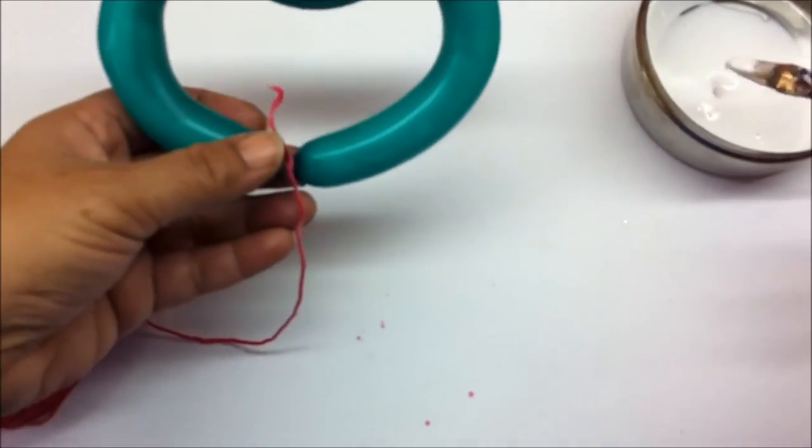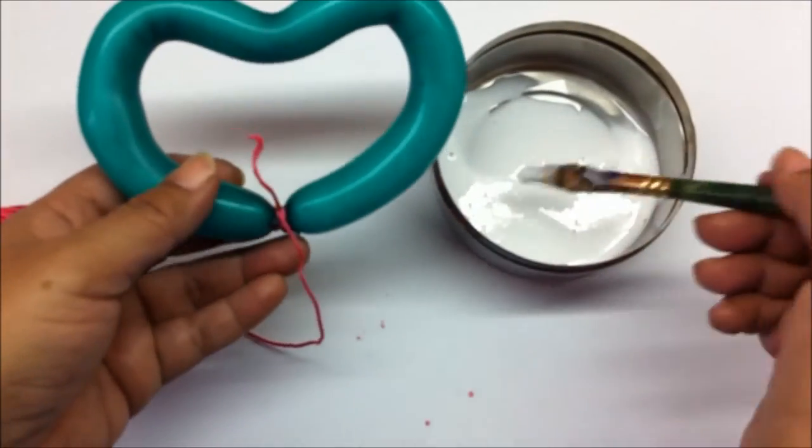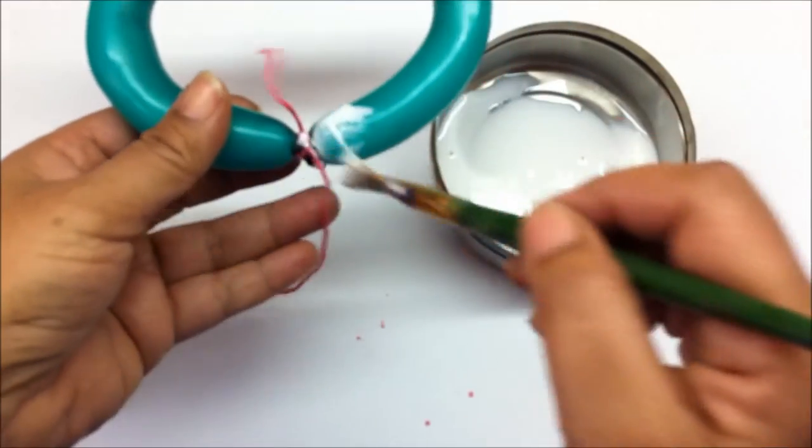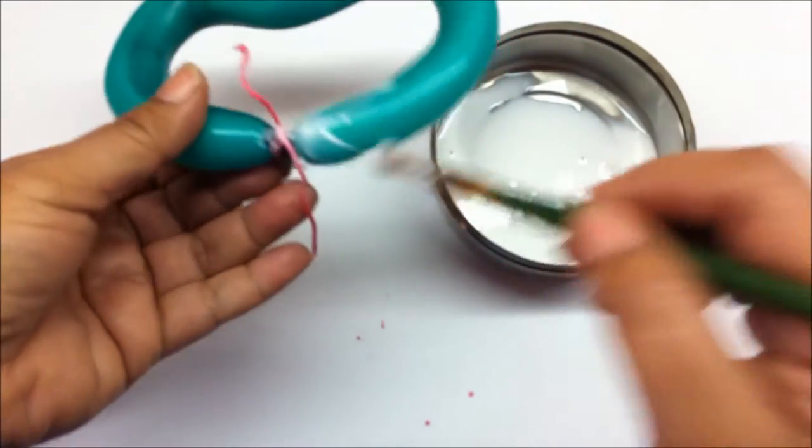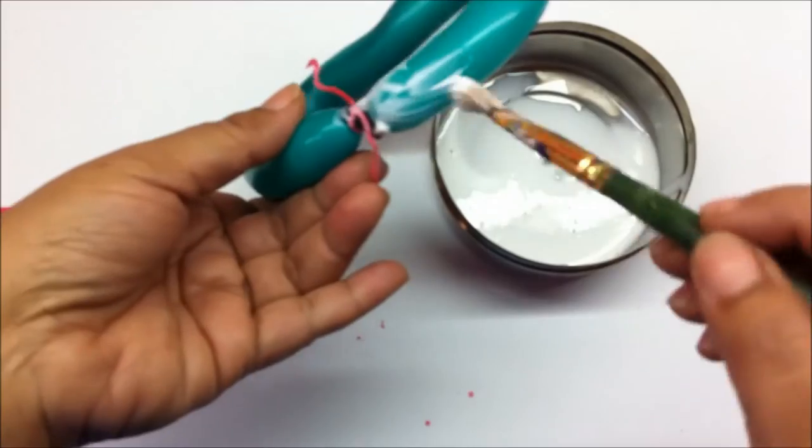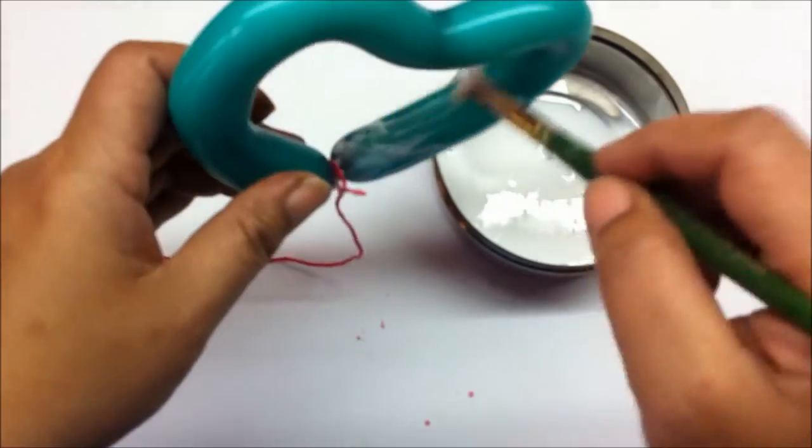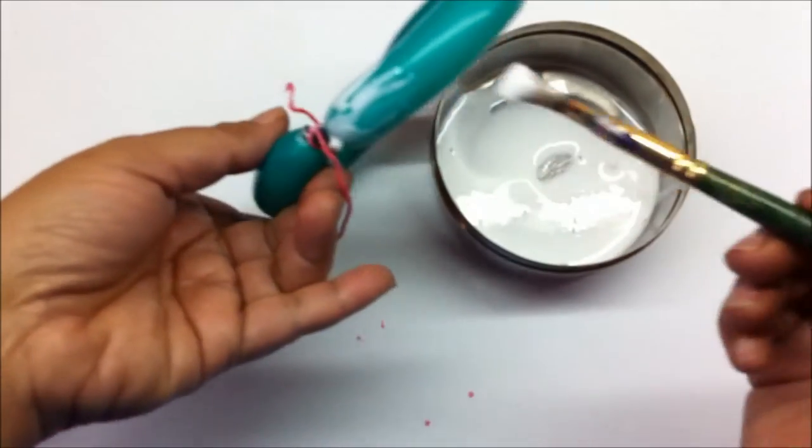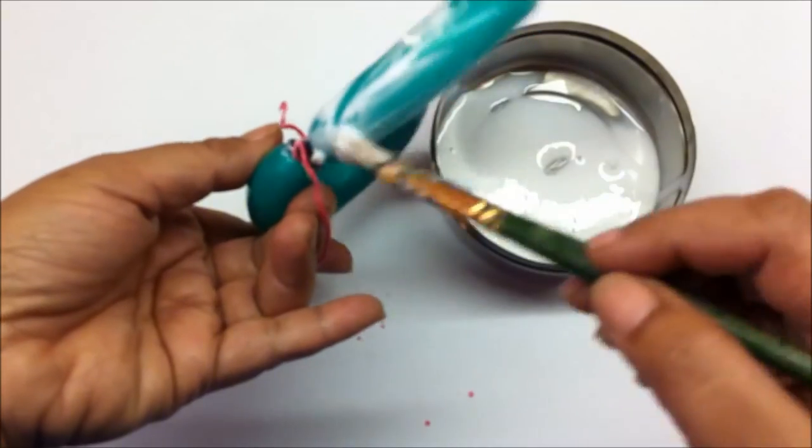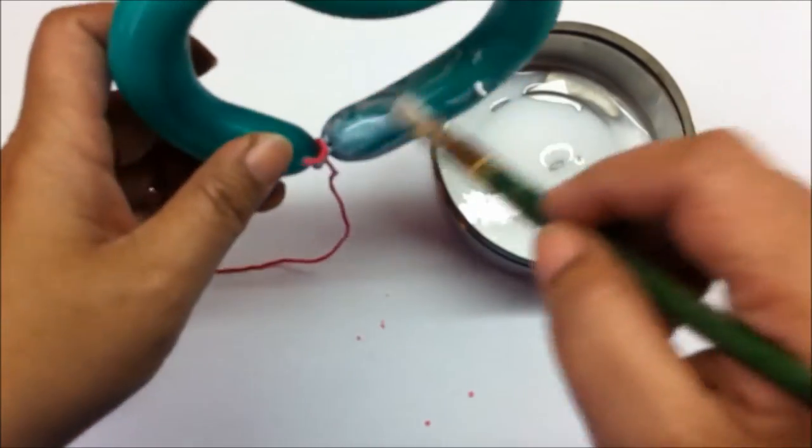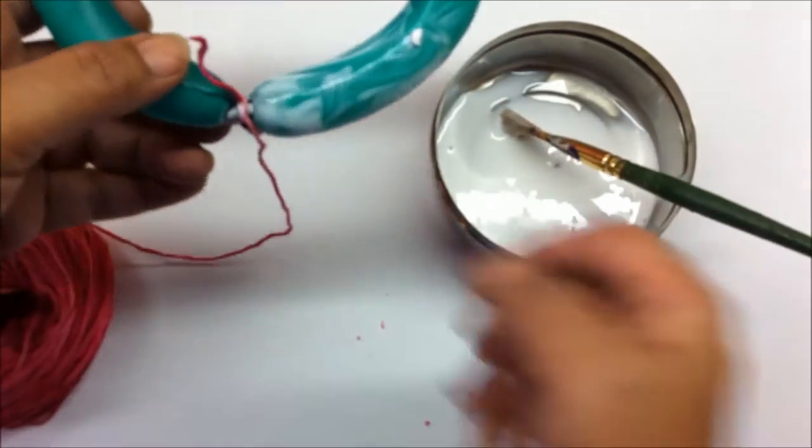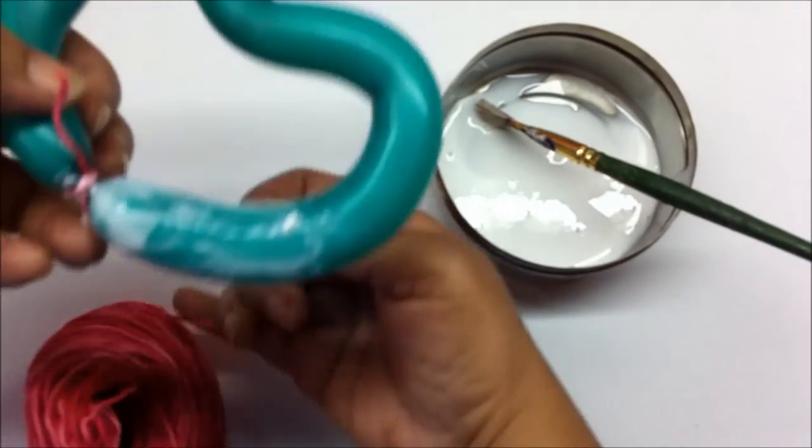Now keep applying glue on the balloon and the string, and wrap the string around it on the balloon in any way you want. Zig-zag. You don't need to be neat or anything. Just go round.